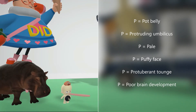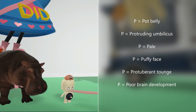In the scene, his tongue is sticking out because he's very hungry, but for our purposes it helps us remember the protuberant tongue. And his brain over here looks underdeveloped — it looks a little bit unintelligent — as poor brain development is another finding in Cretanism.